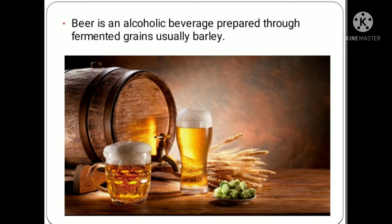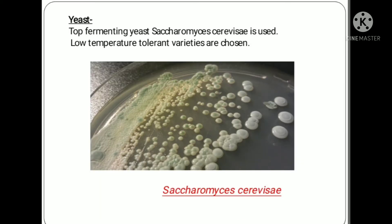Beer can be defined as an alcoholic beverage prepared through fermented grains, usually barley. The top-fermenting yeast Saccharomyces cerevisiae is the most widely used among all the yeasts for the fermentation and production of beer. Strains should be chosen that are low temperature tolerant varieties. In this manner, the low temperature favors the growth of the yeast and not bacteria, which may enter as contaminants on the starting materials. The yeast used in beer making ferments the different types of sugars found in the wort — pre-fermented beer — to produce ethanol. This species has been in use for thousands of years; however, nowadays many mutant varieties of yeast are used, which give a much better production.